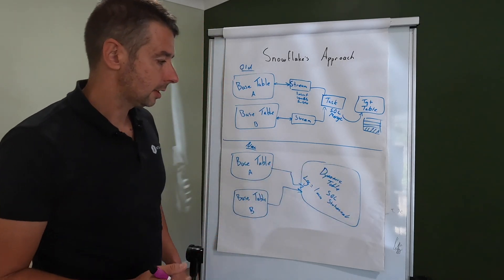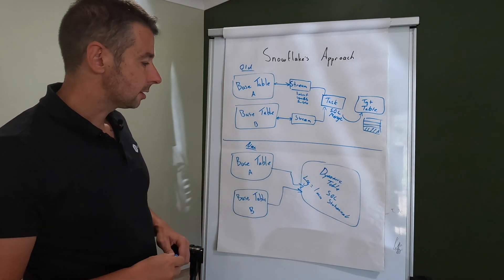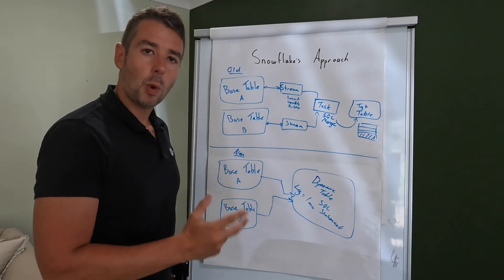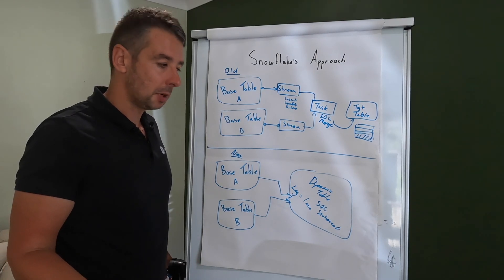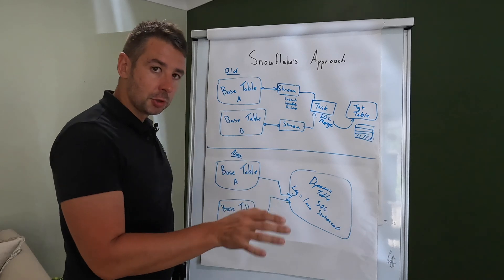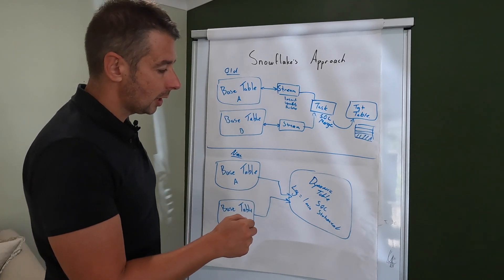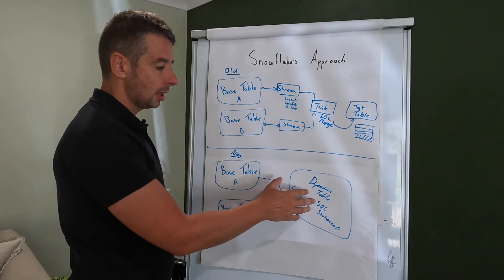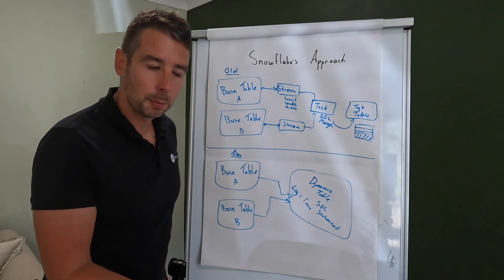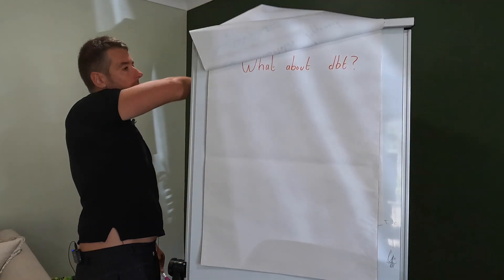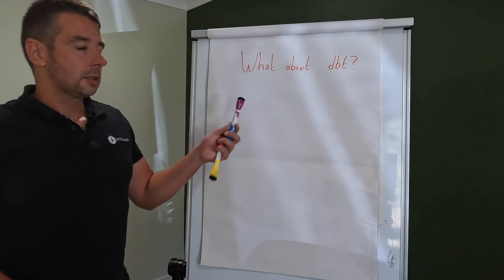So we don't need streams anymore, we don't need a task anymore because we've got this lag time which specifies and tells Snowflake how frequently we want to refresh this dynamic table. So if we refresh it every one minute this is going to look for any changes in that previous minute, execute the refresh and the table is available for your end users. Now it's looking at this approach where people instinctively go well why do I need DBT anymore because in DBT you're using SQL statements predominantly to create your DBT models which is essentially the same as creating a dynamic table.